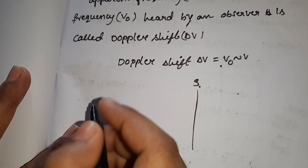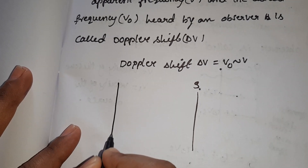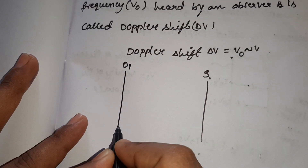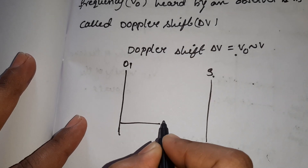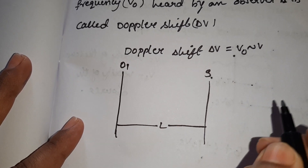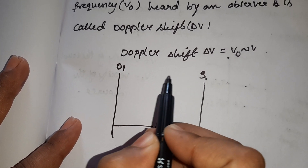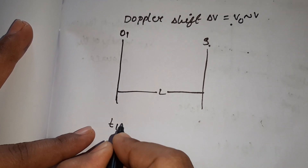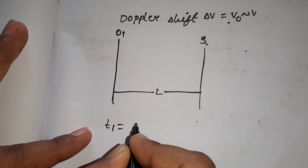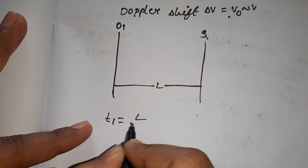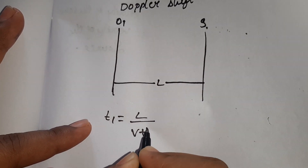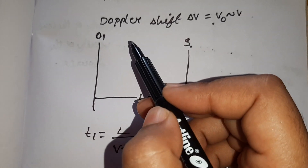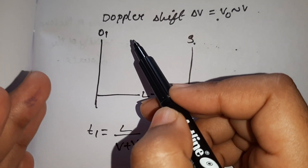So we are looking at the Doppler shift. The distance between them is considered, so the first wave travels a distance between them. So t1 is equal to distance by velocity, that is L by V plus V0.